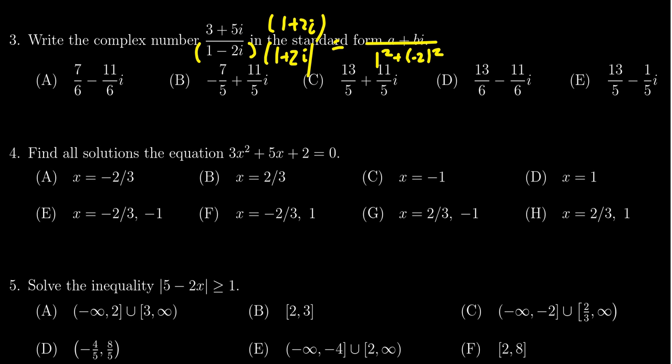We're going to get 3×1 which is 3, then 3×2i which is 6i, then 5i×1 which is 5i, and lastly 5i×2i which gives us -10. I took the liberty of noting that i²=-1.